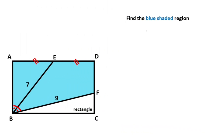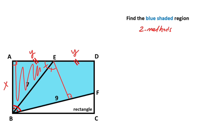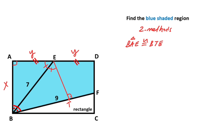This was the first method. Now we will calculate the value of the shaded region using a second method. Let's call this length x and this length y, so here is equal to y. We know that here is 90 degrees. So if we draw a perpendicular line like this, these two angles must be equal to each other. Therefore triangle BAE and triangle BTE are congruent.